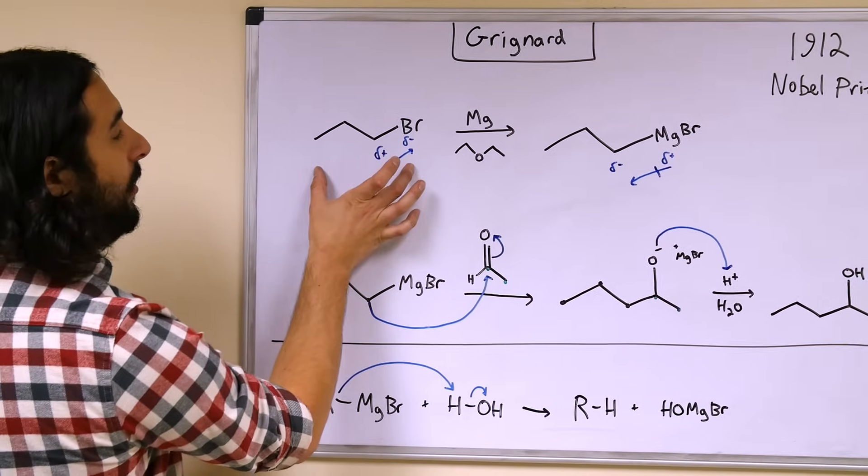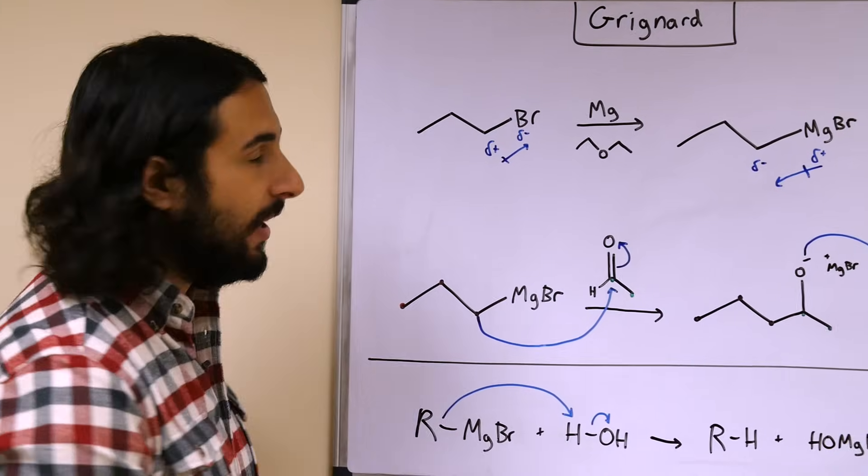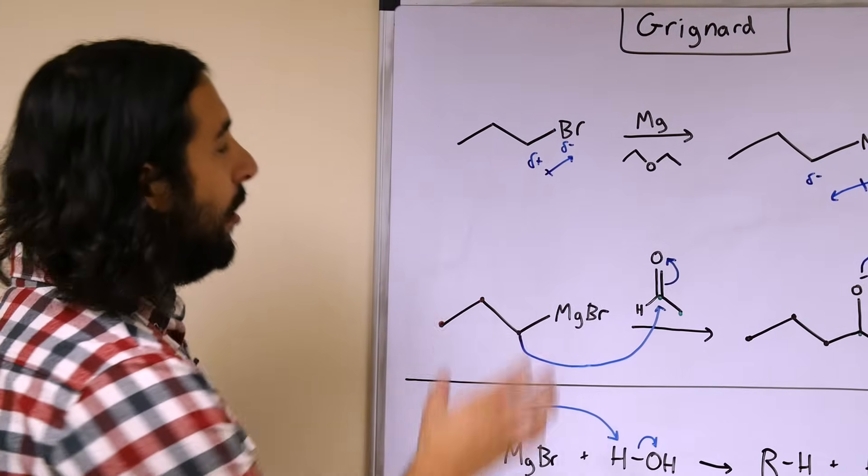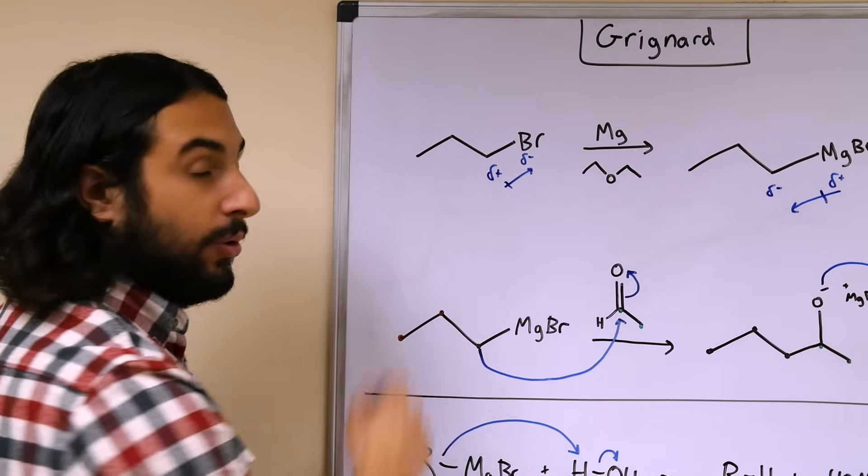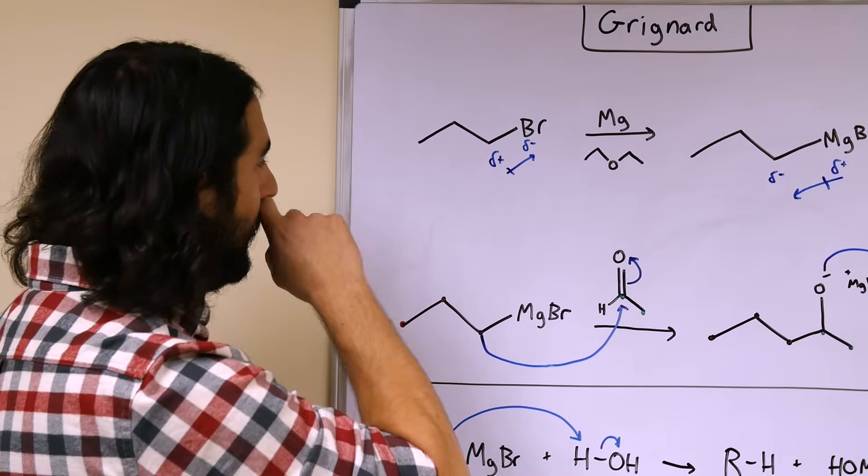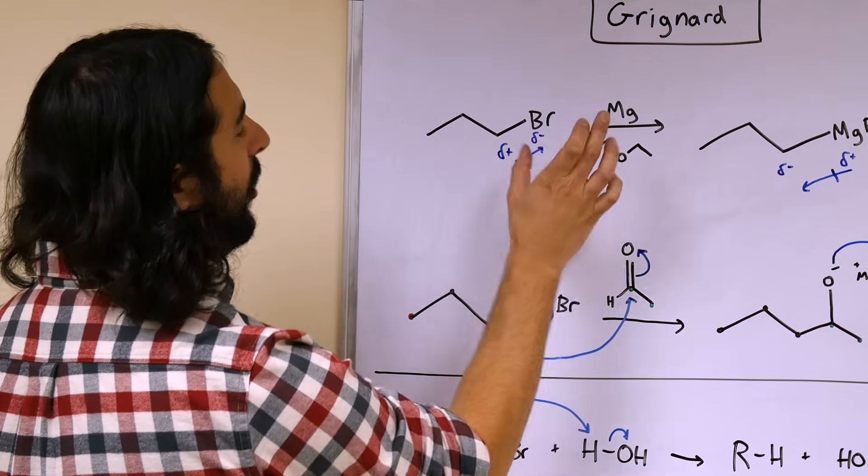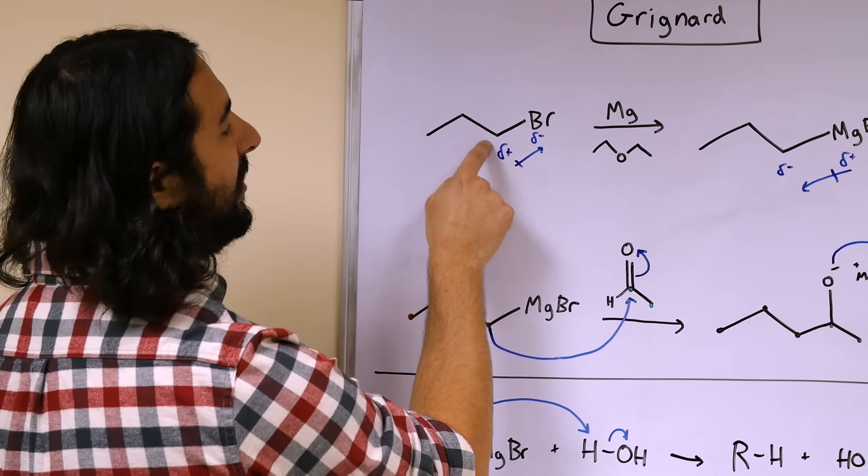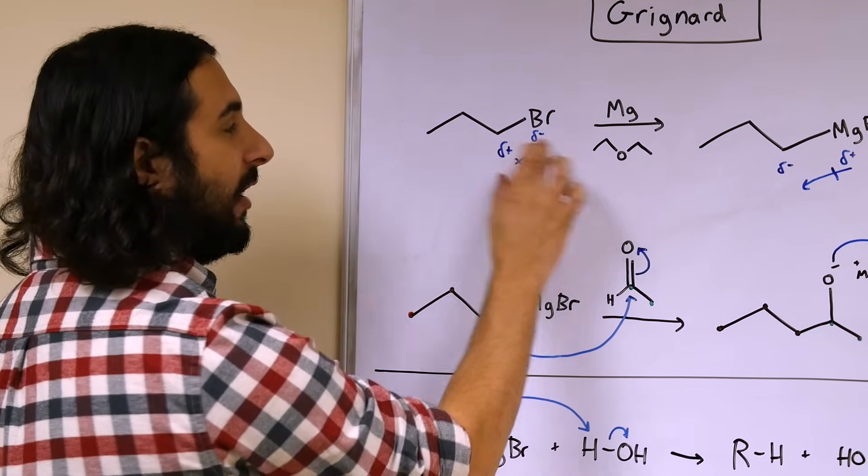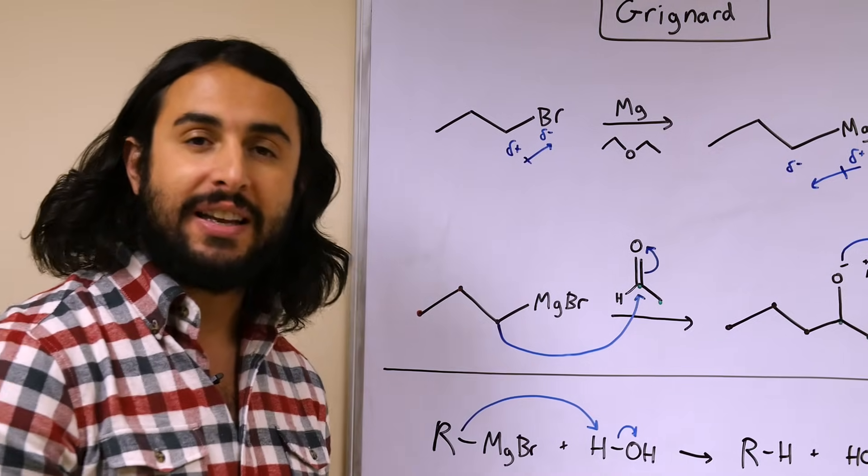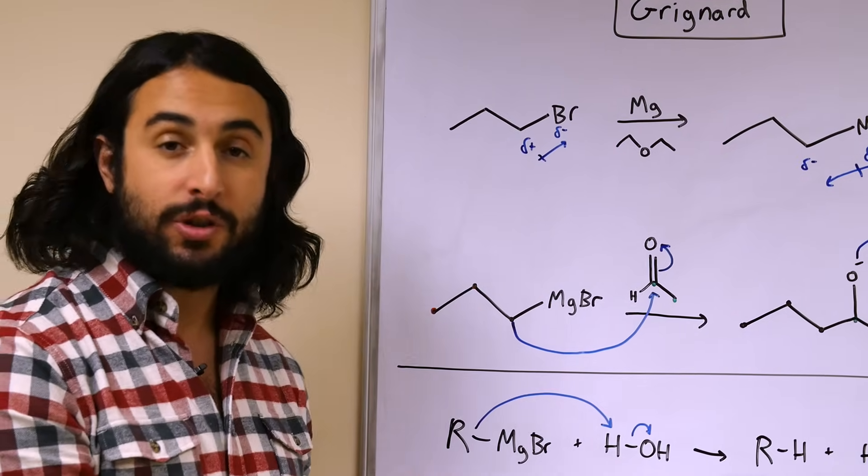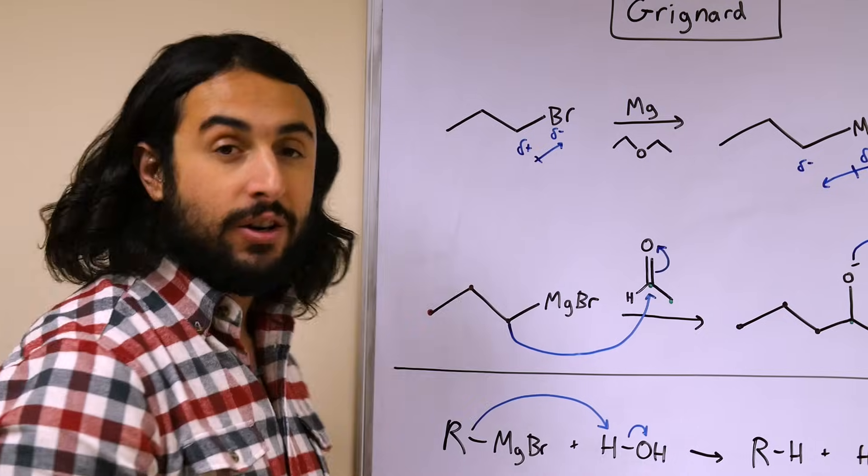So let's look at what's going on here. Let's say we have a typical alkyl halide, an alkyl bromide. Well we know that a carbon-halogen bond is polar because of the discrepancy in electronegativity and the electrons are polarizable. So we're going to have a partial positive charge and a partial negative charge. And that is what we are typically looking at when we're looking at a carbon-halogen bond.